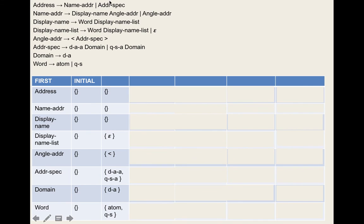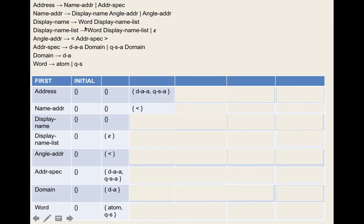For word, it appears in rules three and four. In rule three: it's not the last element. Rule three applies if display-name-list has epsilon in its first set — yes it does — so we add the follow set of display-name — {<}. Rule four also applies: add the first set of display-name-list minus epsilon — that's {atom, quoted-string}. In rule four, same situation applies, adding {<} again. So follow set of word = {atom, quoted-string, <}.